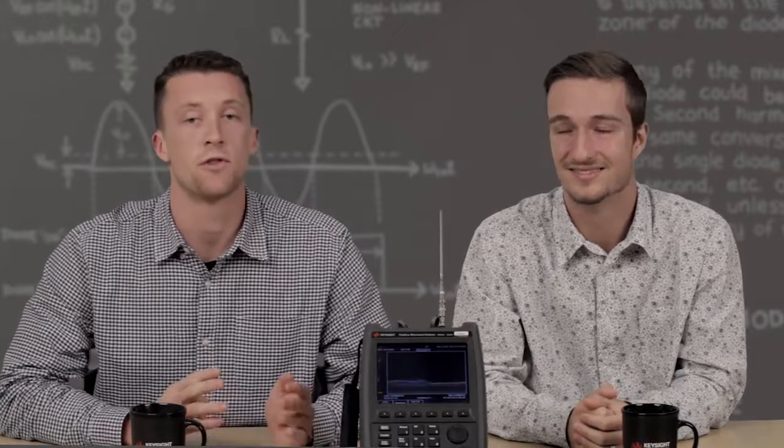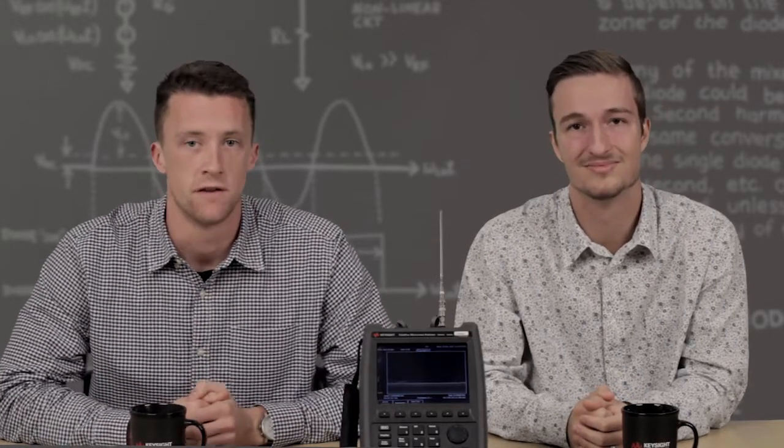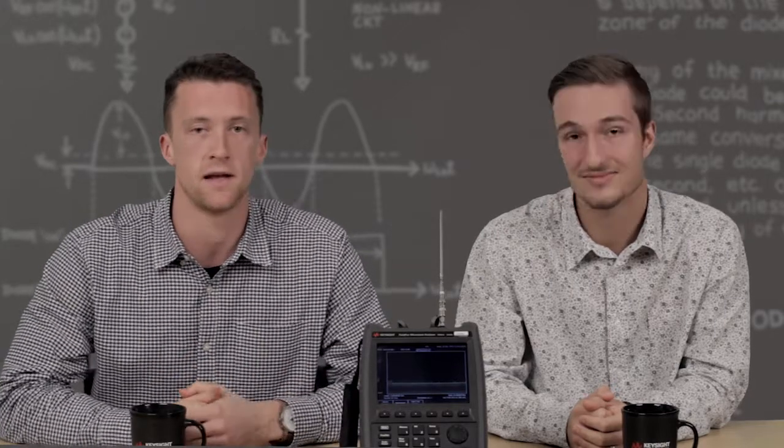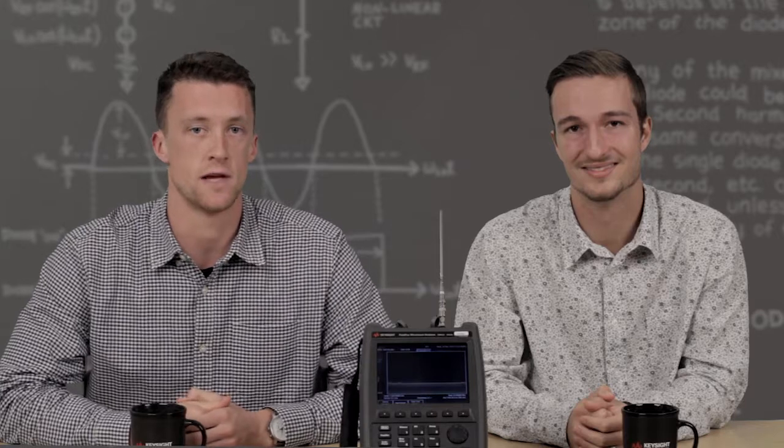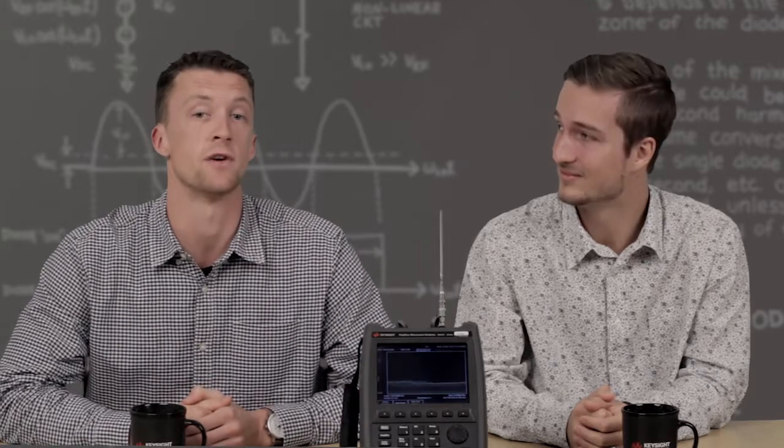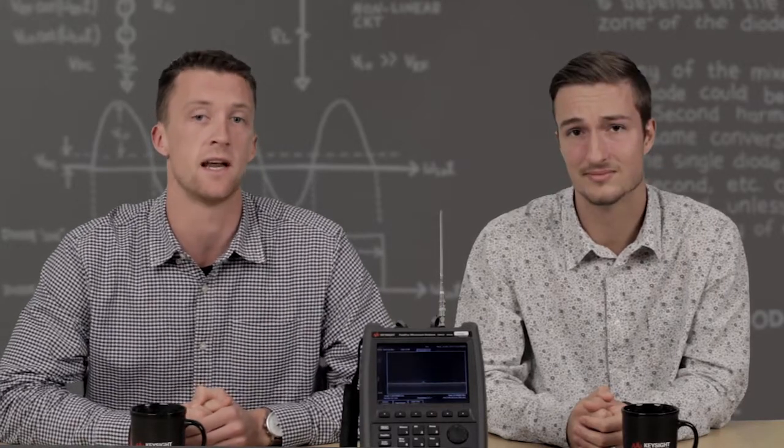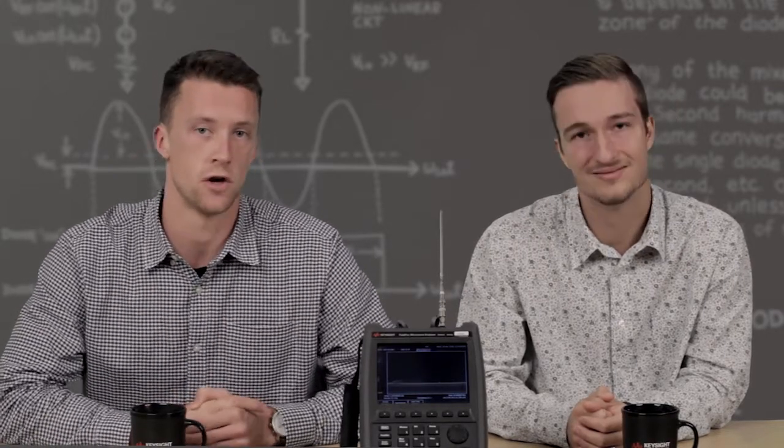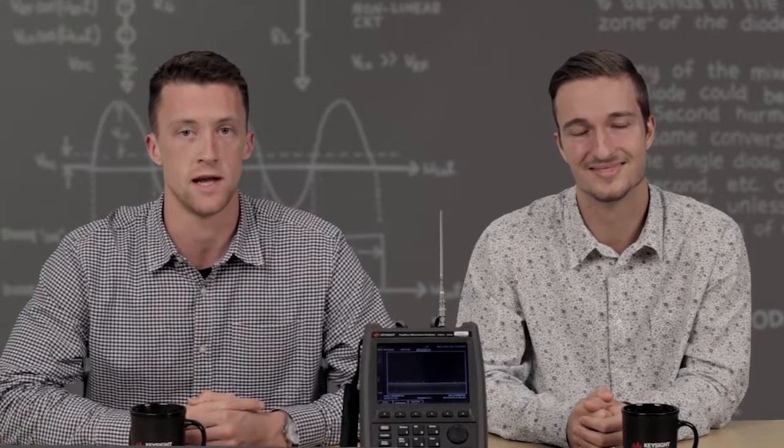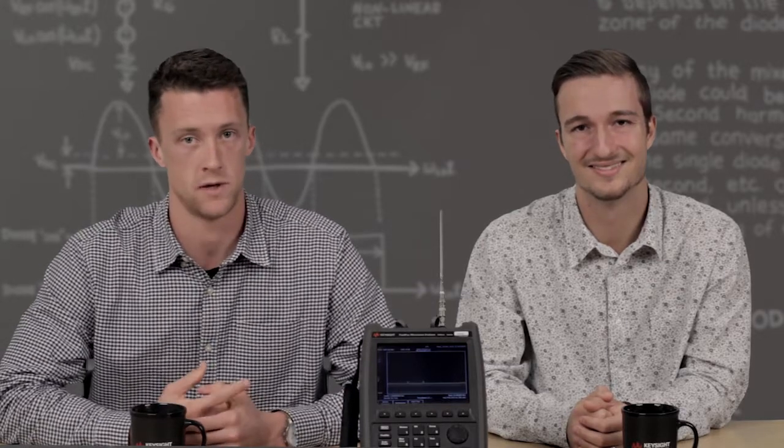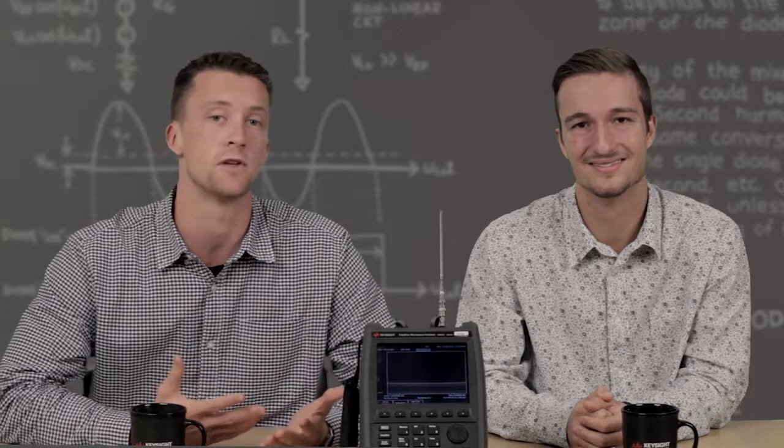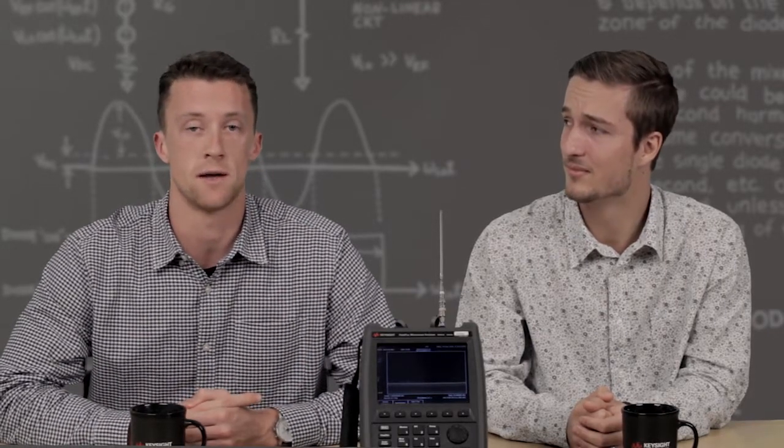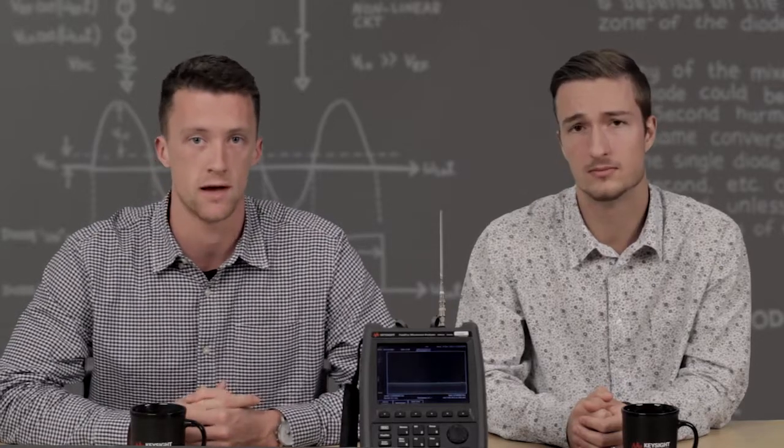And there are actually three modes of real-time operation on the FieldFox. The first one, real-time spectrum, essentially shows the same thing that the traditional SA mode does. It shows amplitude versus frequency. The only difference is that it is showing it instantaneously in real-time. The second mode, called density spectrum mode, shows amplitude versus frequency and frequency of occurrence, which makes this mode very useful for showing signals that fall on top of each other. The third mode, spectrogram mode, shows amplitude versus frequency and how these occur over time.